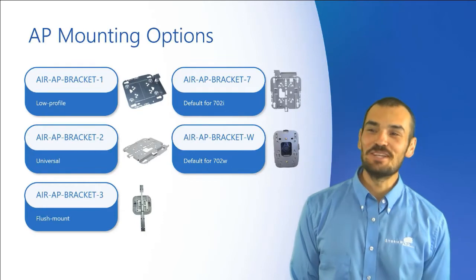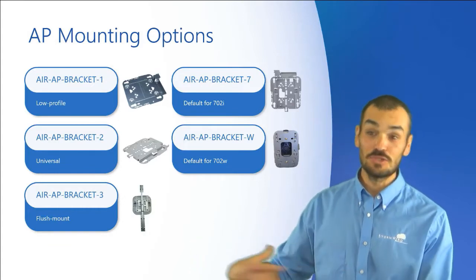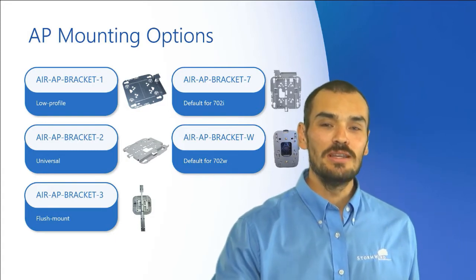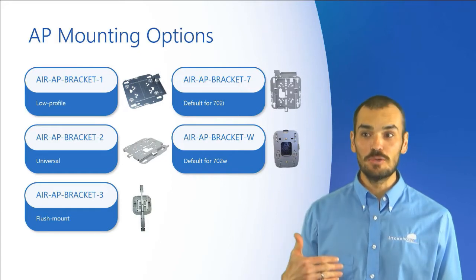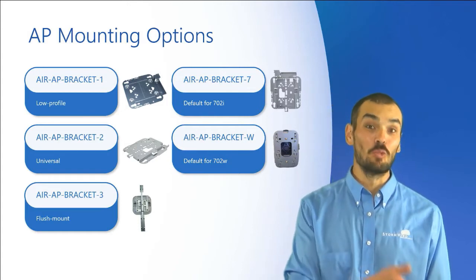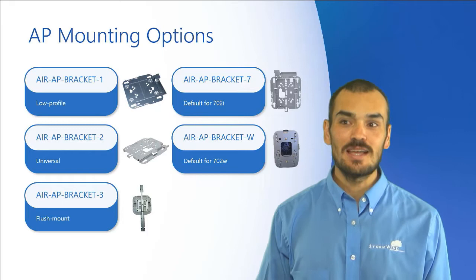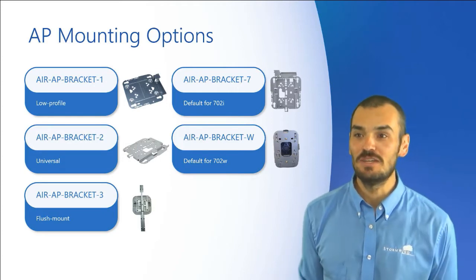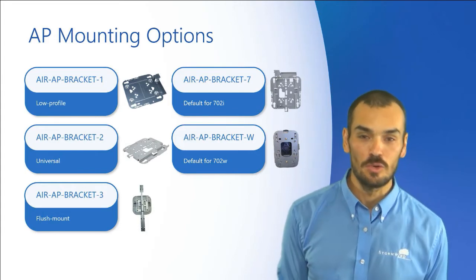The access point mounting options take the next step. We've covered the access point modules, the access points themselves, and the power options — now we look at mounting. The Air AP Bracket 1 is considered low profile, really the best option for mounting your access point below the ceiling tiles. However, it won't accommodate networking and electrical requirements, and you can't use it for wall mounts. You'd have to cut the ceiling tile or drywall to pipe in the cabling needed to power and connect the access point. These brackets are shipped by default unless you specify otherwise during the ordering process.